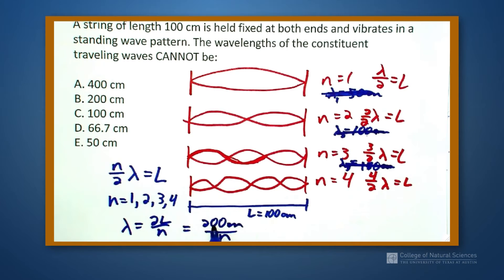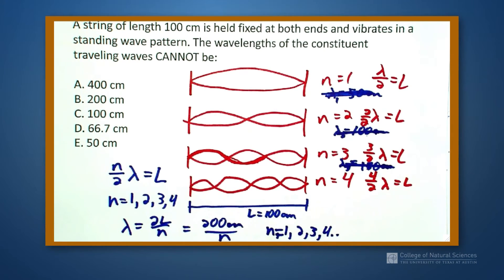So anything that I can divide 200 by with n being 1, 2, 3, 4, so on and so forth is going to satisfy this. I was solving for the wrong thing. Maybe we all make mistakes.